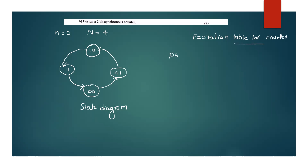Now, the present state and the next state form the required excitation table. The input columns follow from that. For our 2-bit counter, the present state has columns Q2 and Q1, and the next state also has columns Q2 and Q1. This is the present state table and excitation table.